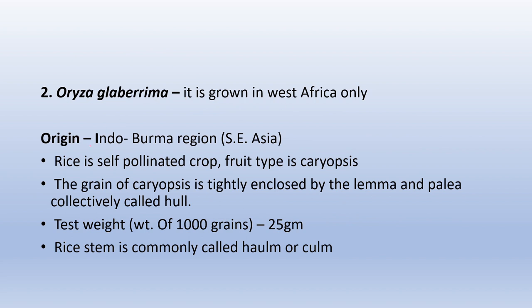Some important points about rice: it originated from the Indo-Burma region and is a self-pollinated crop. The fruit type is caryopsis — in most cereals, the caryopsis is present where the grain is tightly enclosed by the lemma and palea, collectively called the hull, and removing the hull is called hulling. Test weight of rice is 25 grams — test weight means the weight of one thousand grains. The rice stem is commonly called culm.